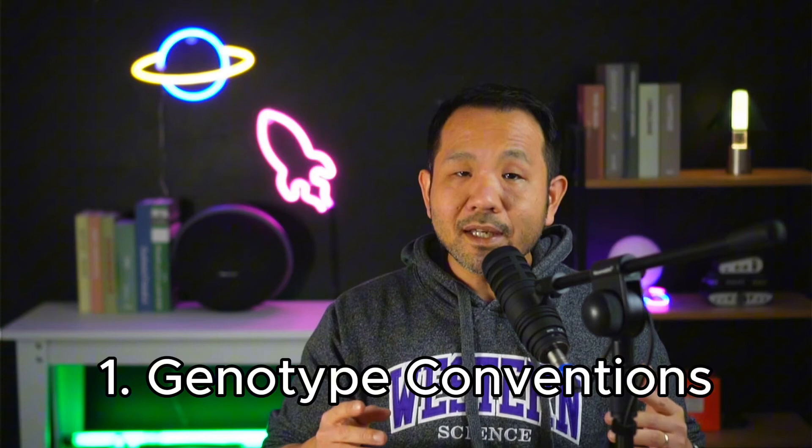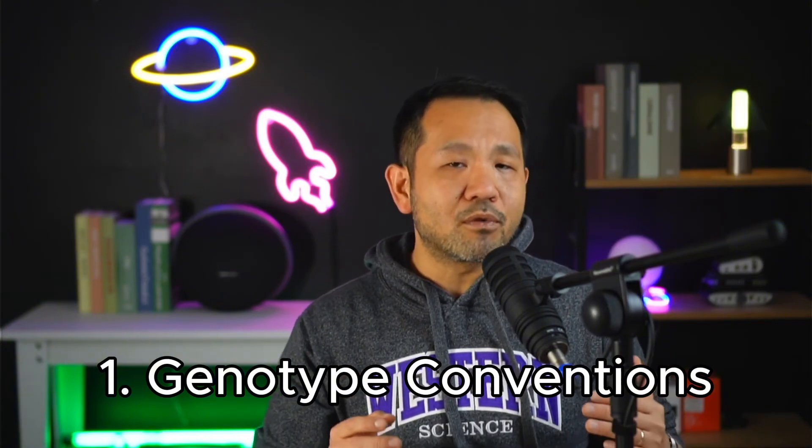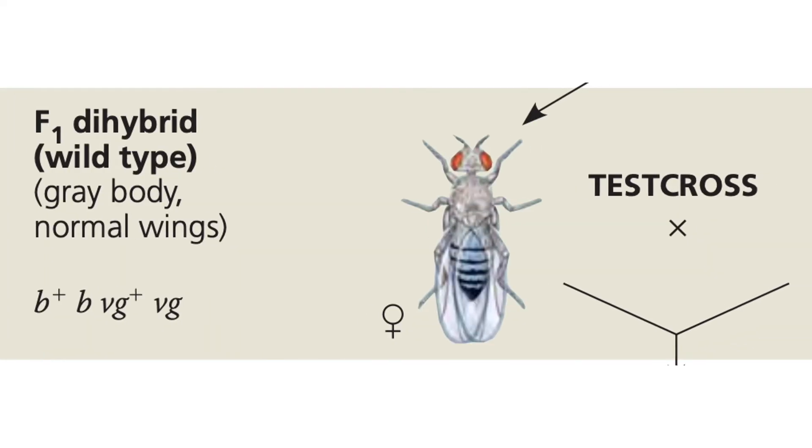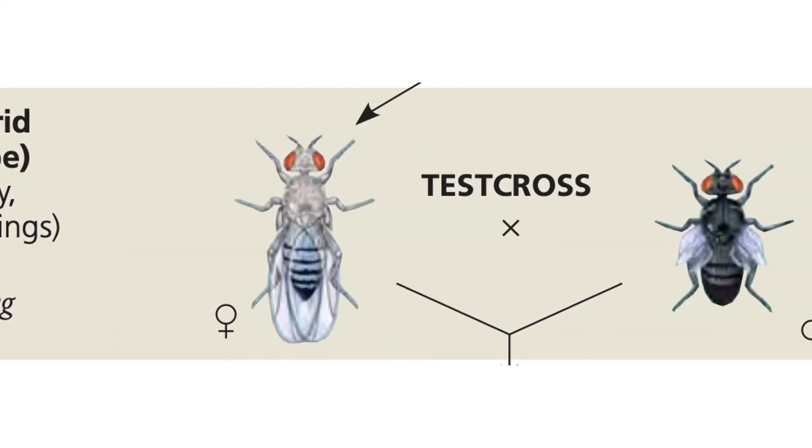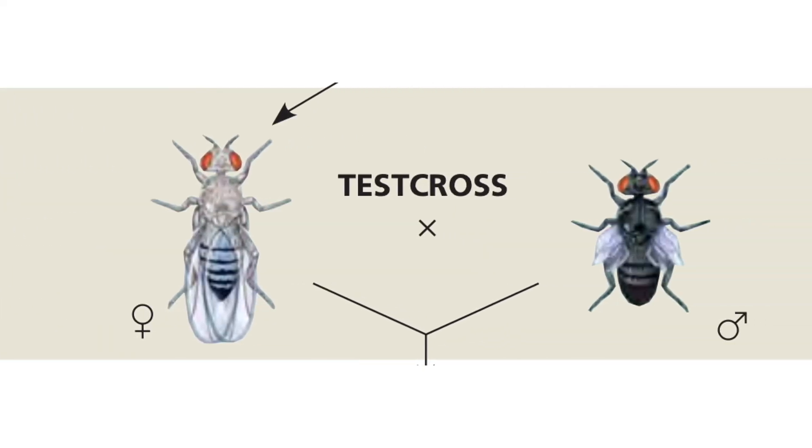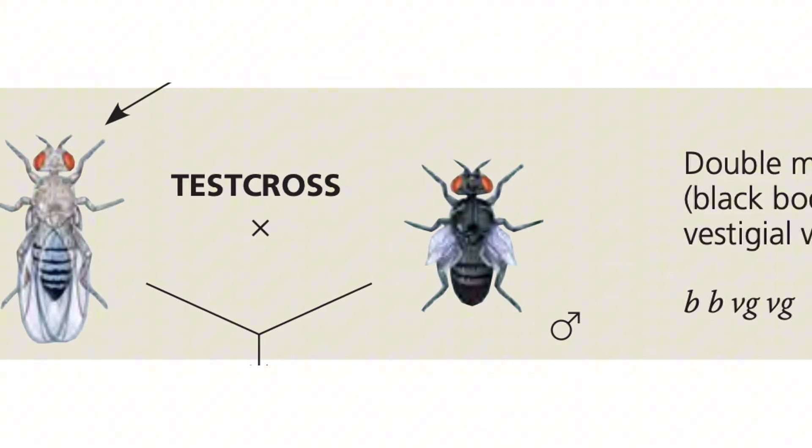While this was a simple example, there are two complications that could arise. First, when studying fruit flies, we don't simply write A's and B's. Instead, we use symbols like B+ for wild type gray body color and B for the mutant type, and VG+ for wild type normal wings and VG for vestigial wings. It's a little trickier because it deviates from Mendelian notation, but it's really no different than using A's and B's.